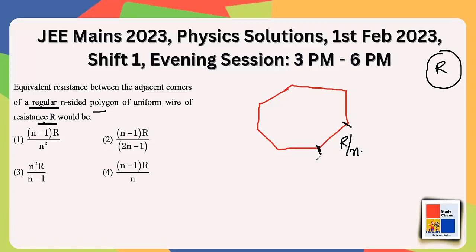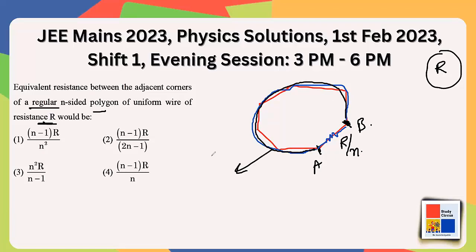We need to find the equivalent resistance between two adjacent points A and B. The one side directly connecting A and B has resistance R/n, and the remaining path through the other (n-1) sides also connects A to B. These two paths are in parallel — the remaining (n-1) sides each have resistance R/n.